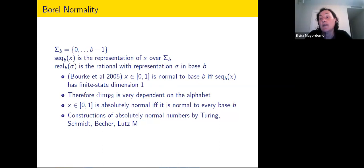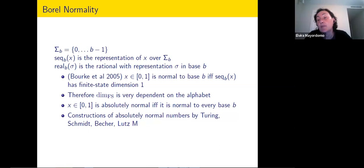It was known — I think it was Castle who proved — that there are numbers normal in a certain base but not in another, for instance normal in base two but not in base three. This makes very clear that finite state dimension cannot be defined for real numbers in a way that does not depend on the alphabet. The alphabet is very relevant. There is also the stronger concept of absolutely normal numbers, which are normal in every base.